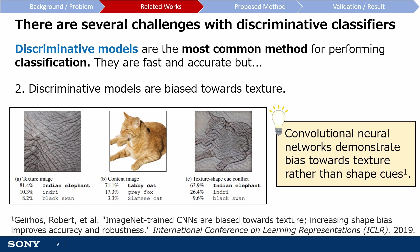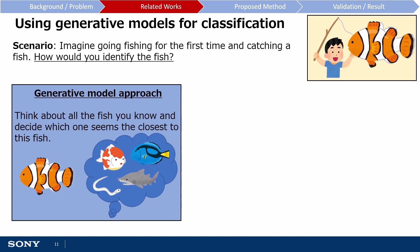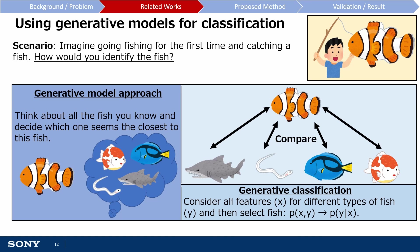Having discussed discriminative classifiers, let's now talk about generative classifiers. To get an intuitive understanding, let's revisit our scenario. Using a generative modelling approach, we would first think about all the fish that we know about as well as their different features. We would then consider all of the features of all the different fish, compare that with the fish we caught, and our best guess would be the fish that is the most similar.